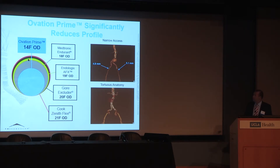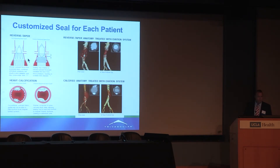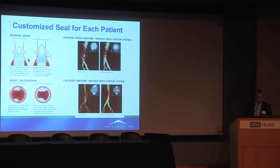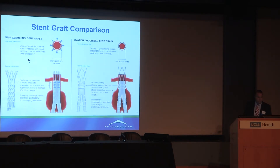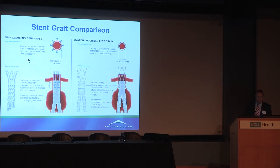The Ovation's low deliverability of 14 French OD compared to other systems enables navigation of tortuous anatomy. For reverse-taper necks, it only requires a 7 mm O-ring sealing zone, though the 13 mm of covered material means you may need to vent to protect the renal arteries. Because of the polymer's conformability, it conforms around calcification. With all polymer-based technology, once the polymer is set it has essentially zero radial force — unlike high-radial-force modular devices, which have been shown to expand the neck over time. Polymer devices have very good data demonstrating prevention of later neck expansion.